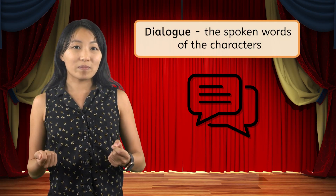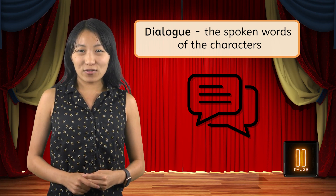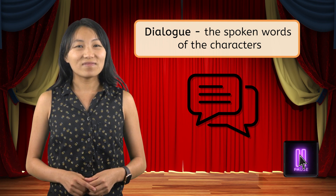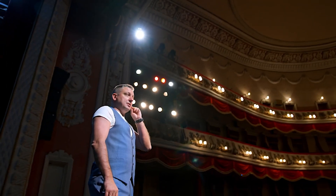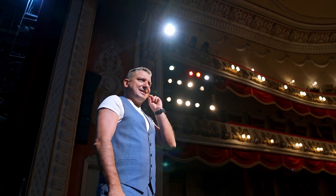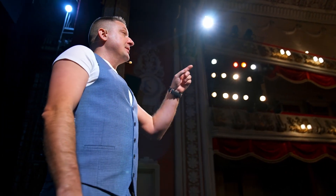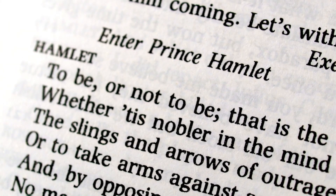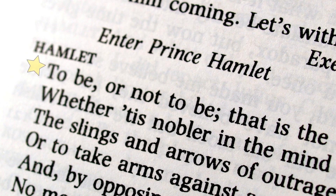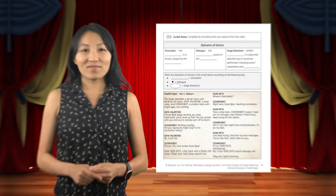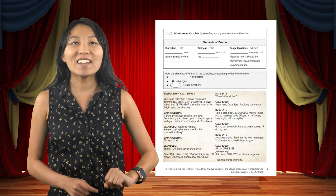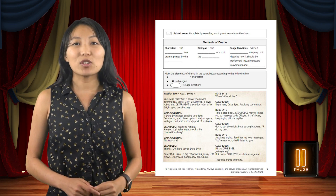Our next dramatic element is dialogue. Dialogue is the spoken words of the characters. Pause the video and write that definition in your PDF. In plays, dialogue is the only element of the script that is actually spoken aloud by the actors. Because of this, dialogue is the primary driver of both the plot and themes in a drama. In drama, you can recognize dialogue as the lines that appear under character names in regularly styled text — dialogue in a script generally looks like the most normal text. It is not italicized or in parentheses, and it follows standard capitalization rules. In your copy of Twelfth Byte, put a star next to any lines of dialogue that you see. Pause this video here and resume when you are ready to move on.